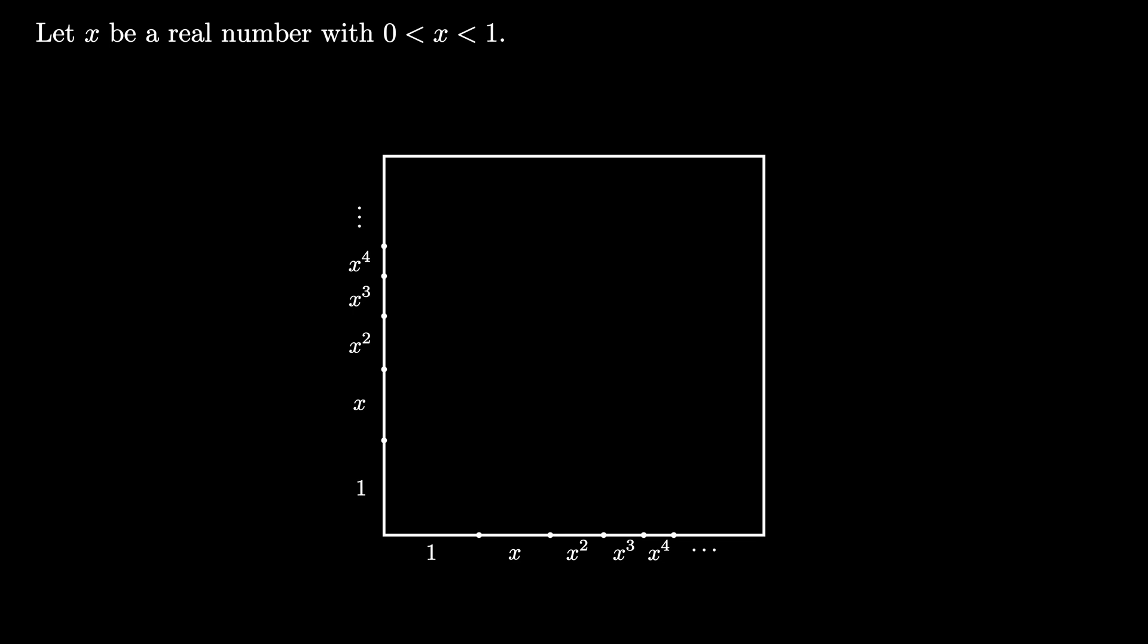Applying the sum formula for an infinite convergent geometric series, we see that the side length of this square must be 1 over 1 minus x.